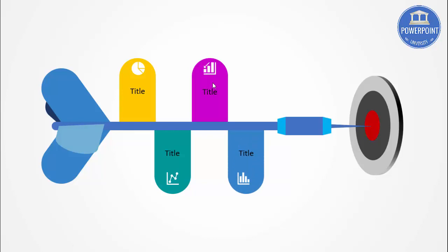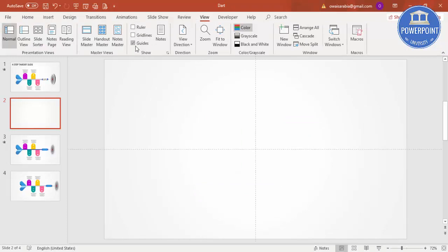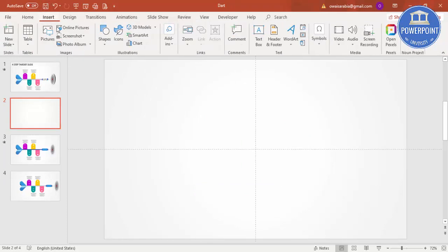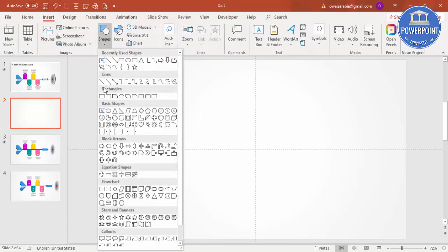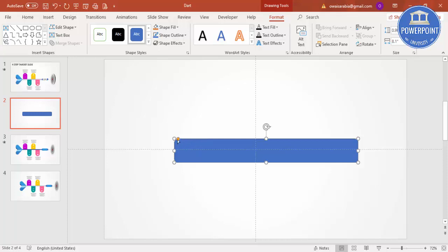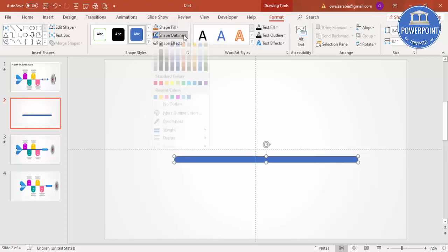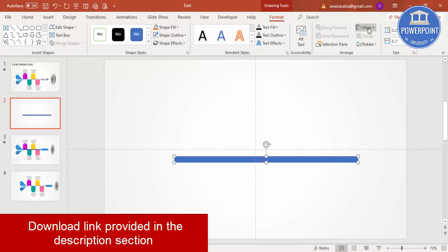Let's see how to do this dart infographics design in PowerPoint. Add a new slide, go to View and enable the guides. Go to Insert Shapes, under Rectangles select the rounded corner rectangle, draw it to size, make it fully curved, then reduce the size. Set shape outline to no outline, then align center and align middle.